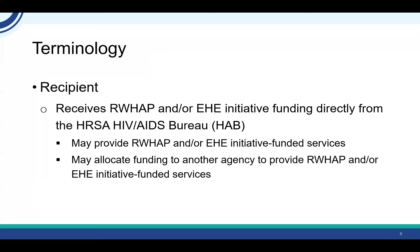So let's start with some terminology. The first term we will review is recipient. A recipient is an organization that receives Ryan White funding that includes EHE initiative funding directly from HRSA HAB. The recipient can use the Ryan White and/or EHE initiative funding to provide direct services to program clients, and they can also allocate the funding to other organizations to provide direct services.